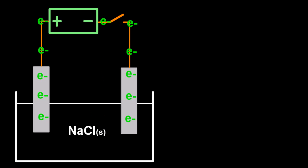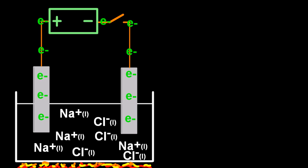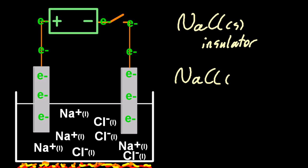In order for it to conduct, in SL at least, you have to melt it, turn it into a liquid by heating it up. This frees the ions up to move around. Solid sodium chloride is an insulator, whereas liquid sodium chloride is a conductor.